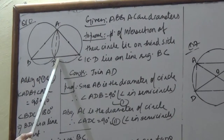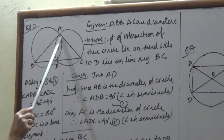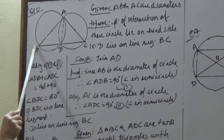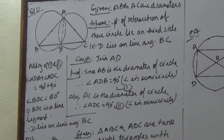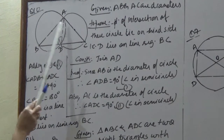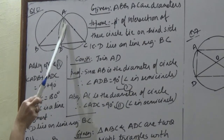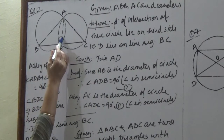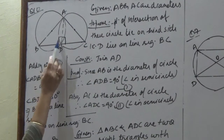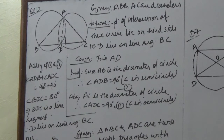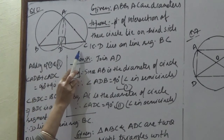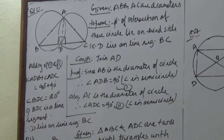For construction, join AD. Since AB is a diameter, the angle in the semicircle gives angle ADB equals 90 degrees. Since AC is a diameter, the angle in the semicircle gives angle ADC also equals 90 degrees. Adding both angles, angle BDC equals angle ADB plus angle ADC equals 90 plus 90 equals 180 degrees. Since angle BDC equals 180 degrees, BDC is a straight line, meaning D lies on line segment BC.